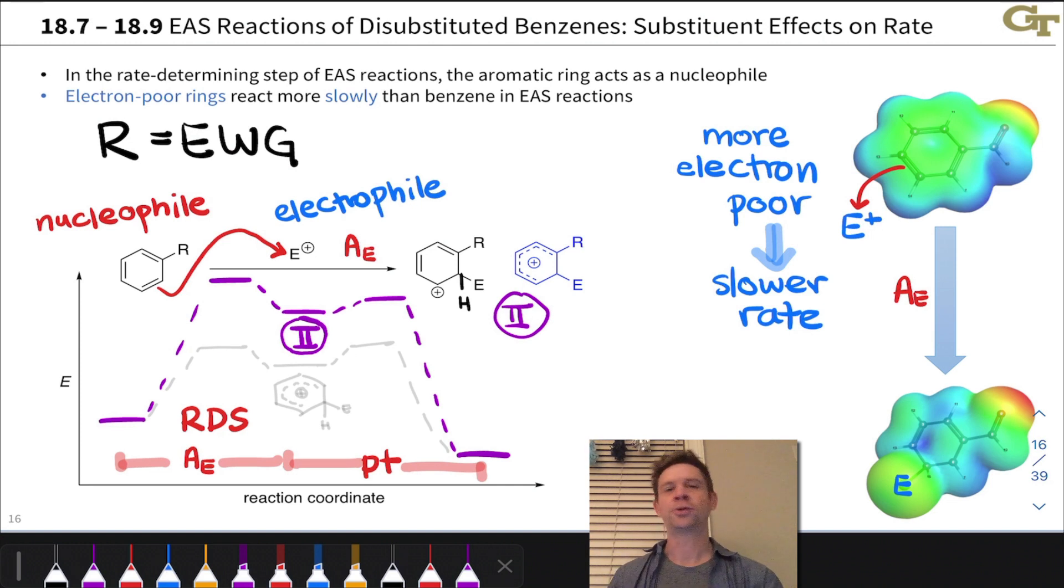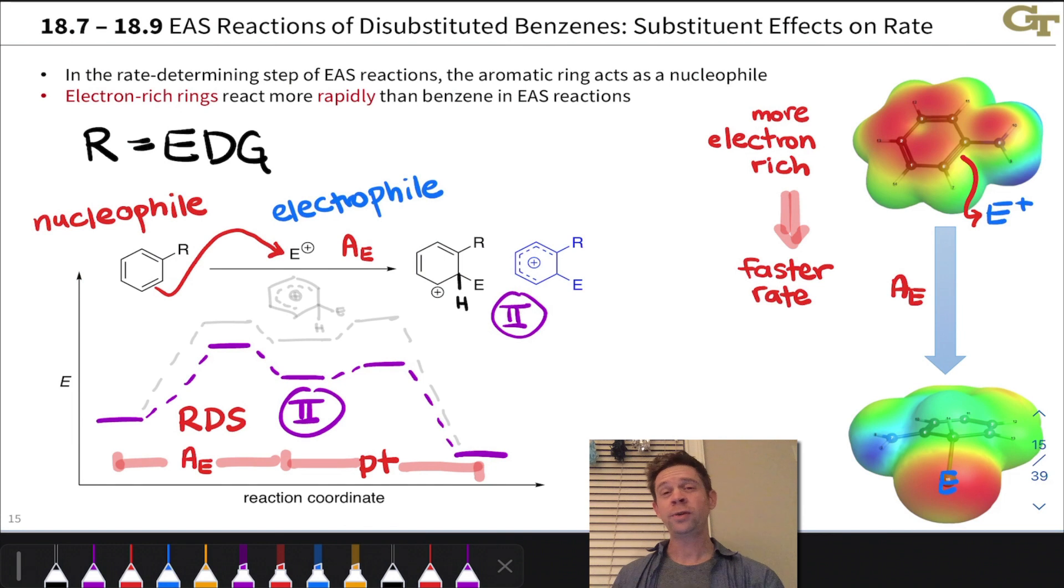The general conclusions here are that electron-withdrawing groups—nitro and carbonyl are the two most important by far—tend to slow electrophilic aromatic substitution reactions by siphoning electron density away from the aromatic ring and making it a worse nucleophile. Donating groups accelerate electrophilic aromatic substitution reactions by donating electron density into the ring and making it a better nucleophile.